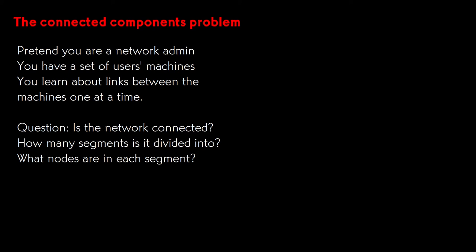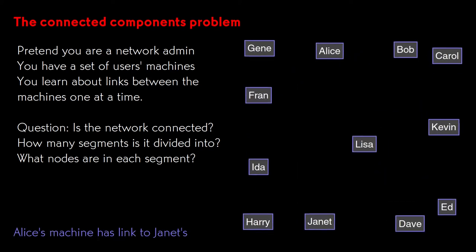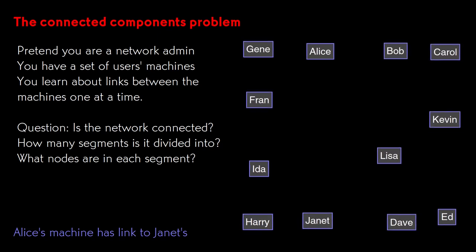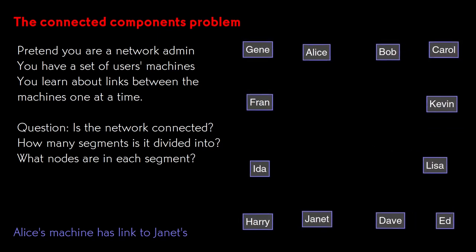To understand the general problem, it's perhaps easiest to proceed with a concrete example. Imagine that you're a computer network administrator. Your users have computers, and there are communication links between the computers. A network is connected if there is some way to send a message from every machine to every other machine by relaying over some chain of the communication links. You learn about the existence of the links one at a time, and want to keep track of whether the network as a whole is connected.